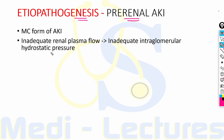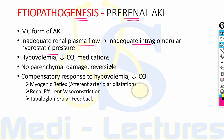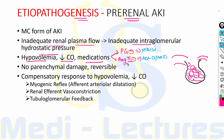Pre-renal AKI is the most common form, in which rise in serum creatinine or blood urea nitrogen is due to inadequate renal plasma flow leading to inadequate intraglomerular hydrostatic pressure. The most common associated conditions include hypovolemia, decreased cardiac output, and medications that interfere with renal auto-regulatory mechanisms — prostaglandin inhibitors like NSAIDs and angiotensin 2 inhibitors like ACE inhibitors and ARBs.